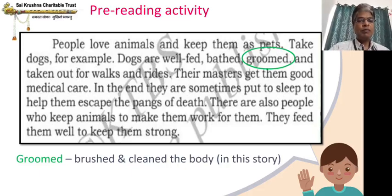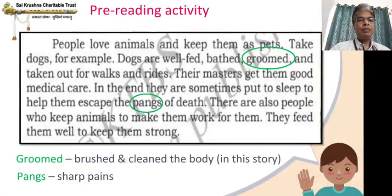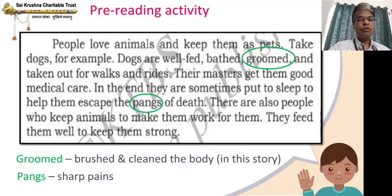So groomed in this chapter means brushed and cleaned the body, and pangs means sharp pains. These passages are simple — everybody loves animals and keeps them as pets, for example dogs. Dogs are given food, given a bath, brushed and cleaned, taken for walks, sometimes taken on bikes and cars. Masters take very good care of them, including medical care. If a serious health problem comes, they can be taken to hospitals and given a peaceful death so they don't unnecessarily suffer too much pain. And there are people who keep animals for work — many of us keep bulls to help in agriculture, harvesting, and plowing the land.